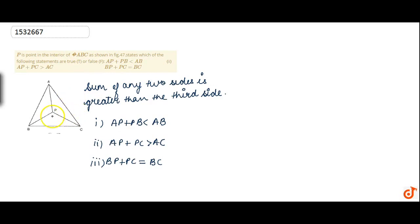We have a triangle where P is any point in the interior of triangle ABC. If we join P to A and B, then we have three triangles. And for three triangles, we have three inequalities.